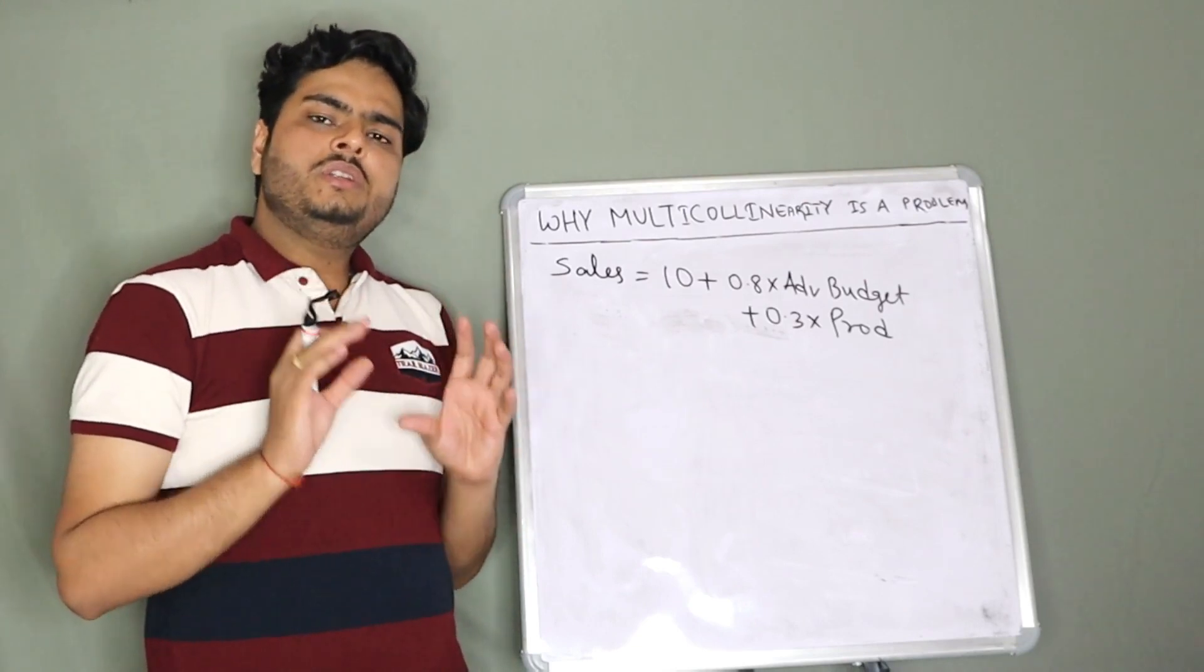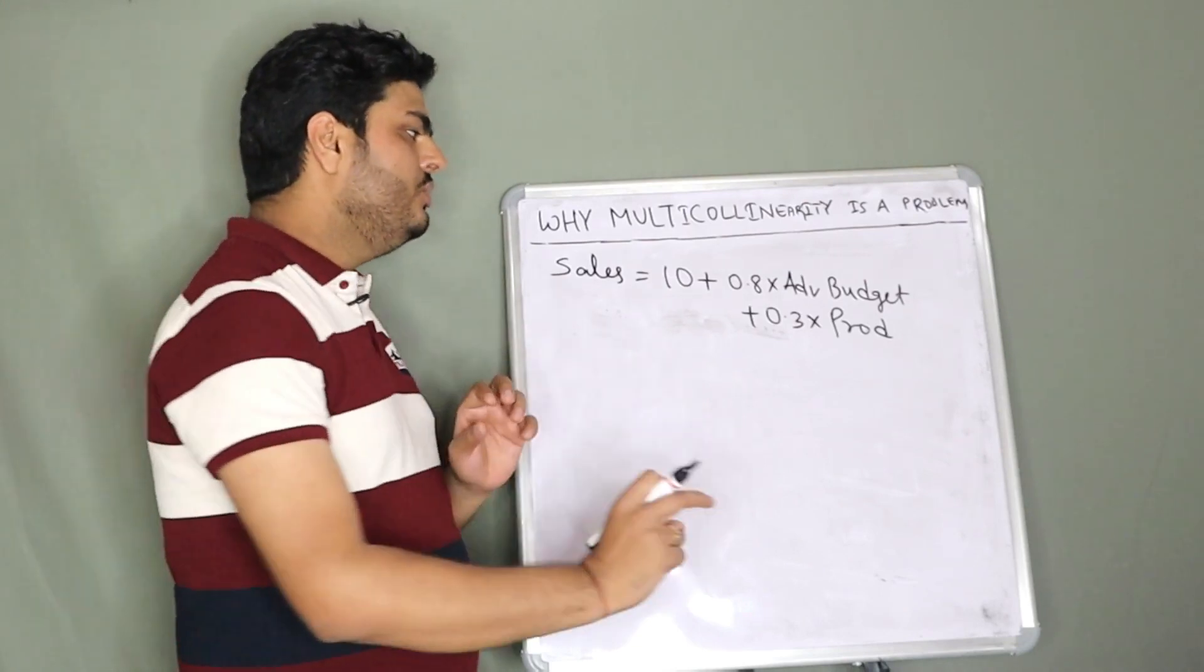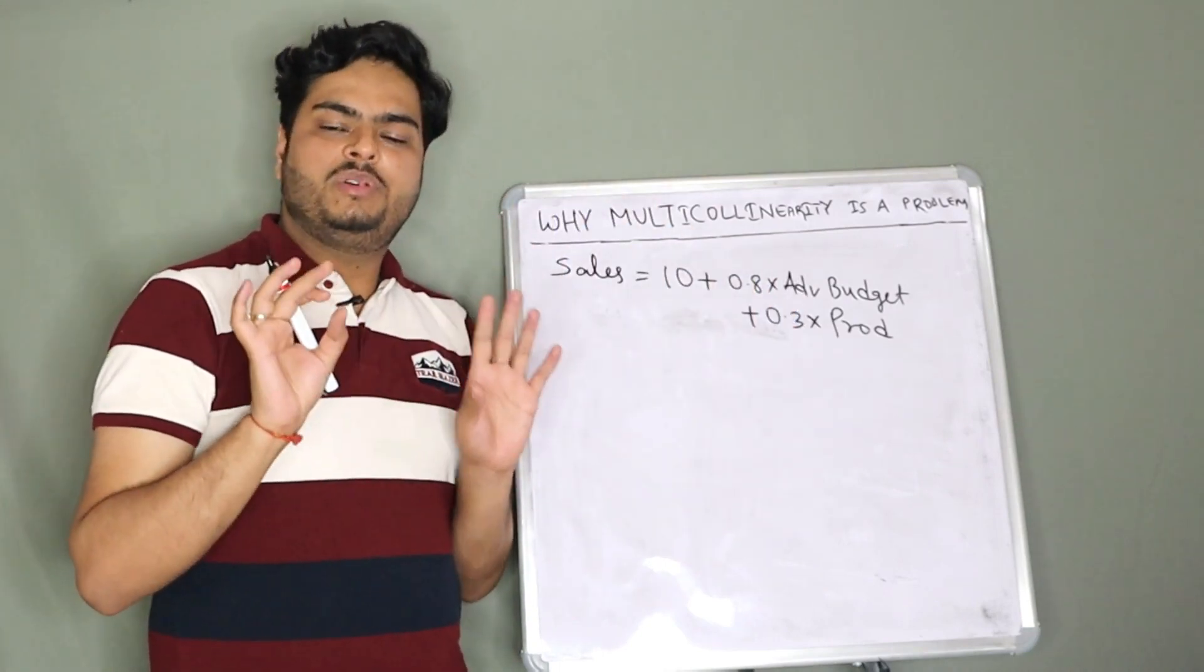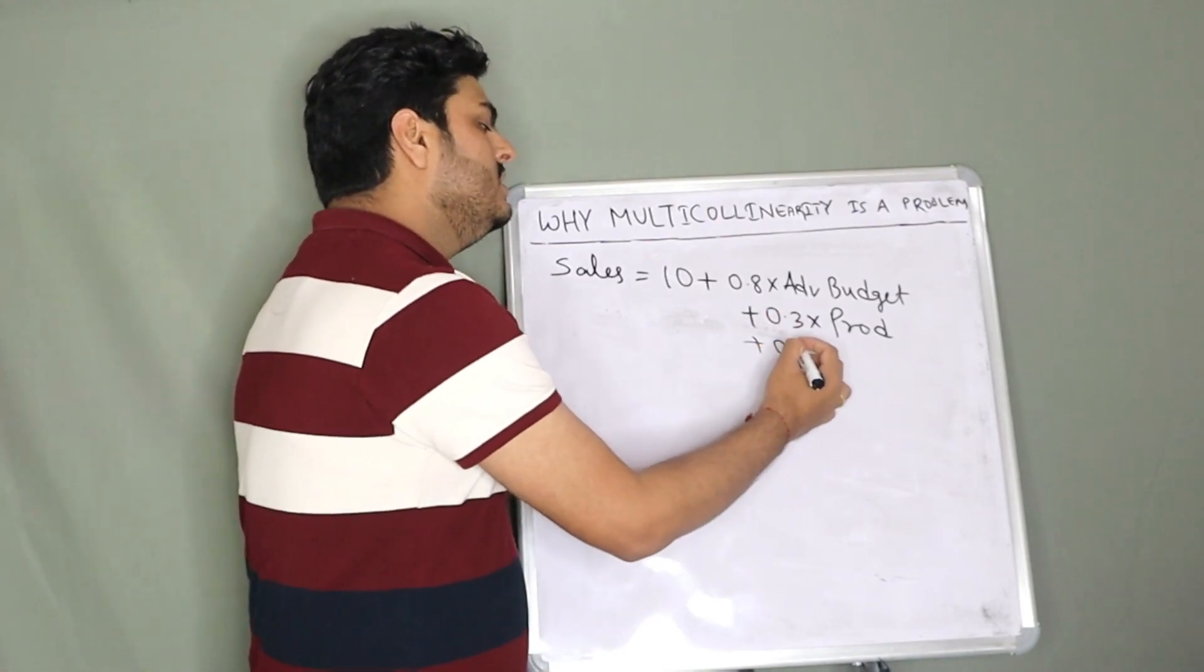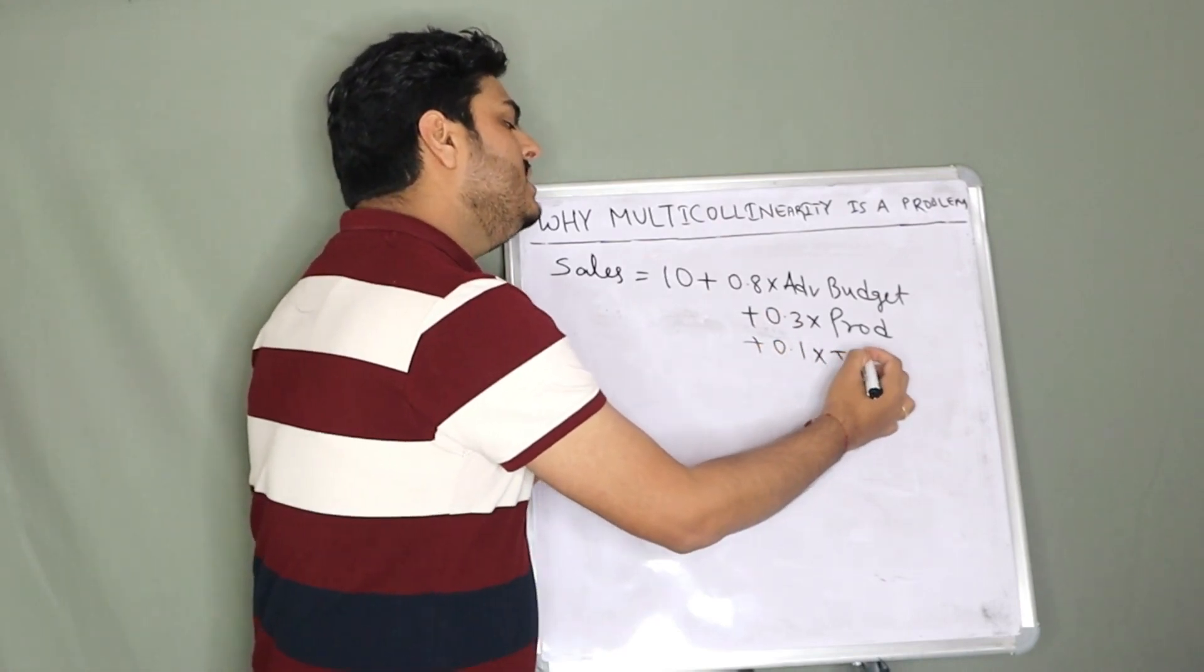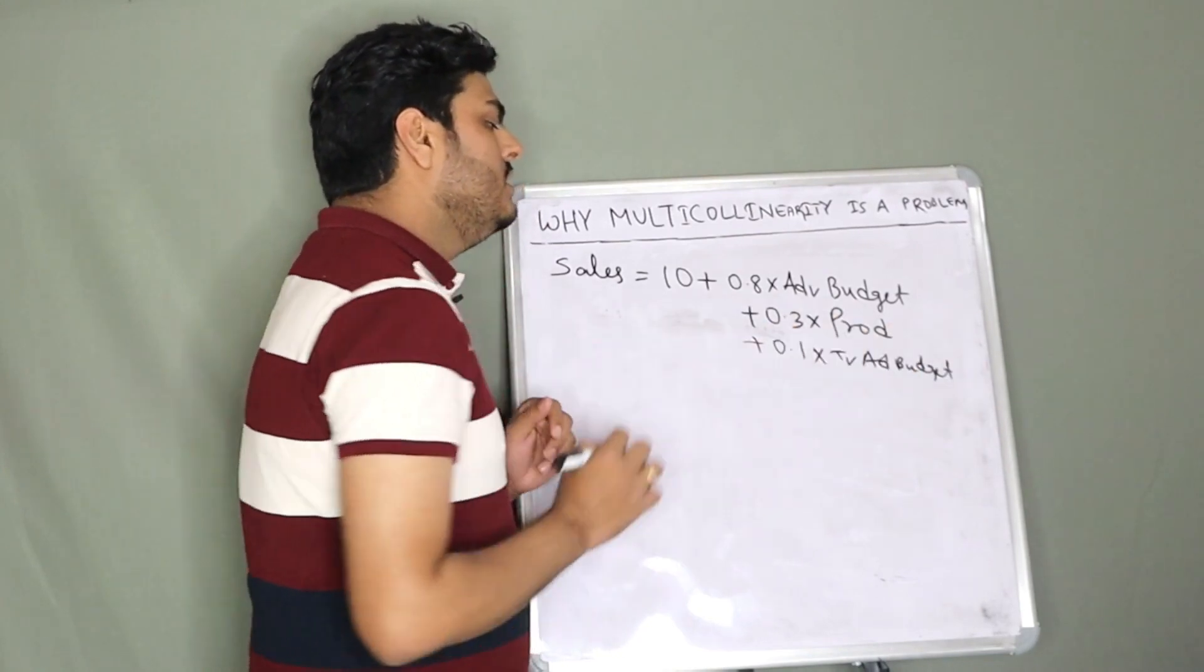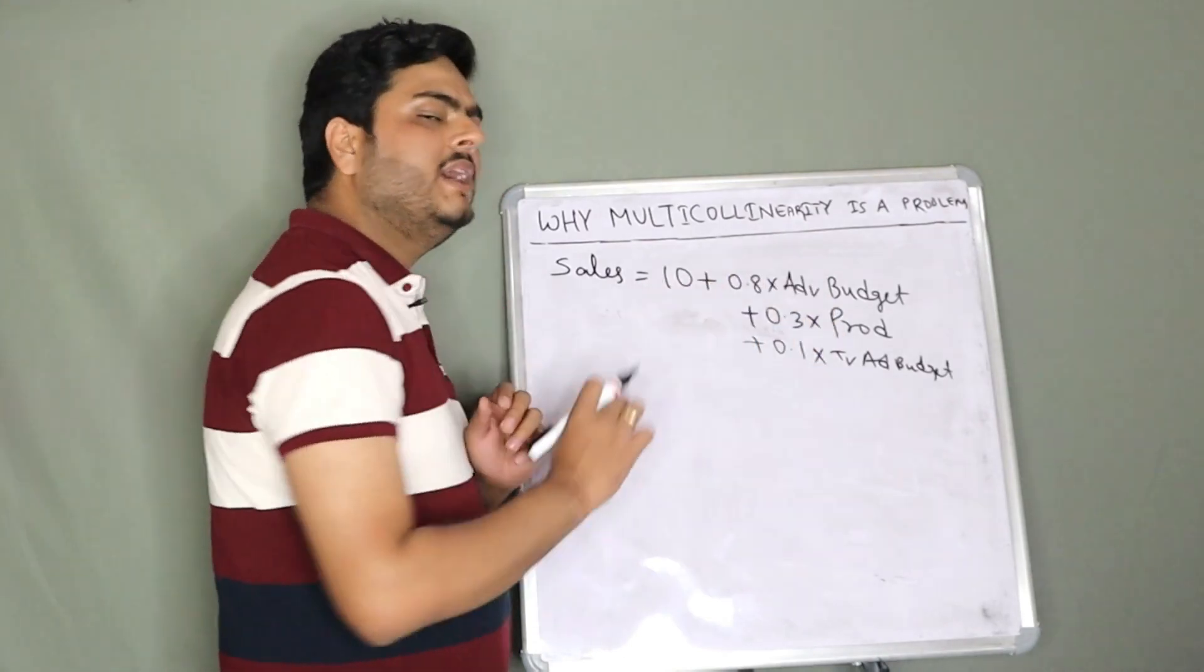Now let's imagine a scenario where while capturing the data, we capture ad budget and we also capture TV ad budget. So one more variable here: plus 0.1 times TV ad budget.